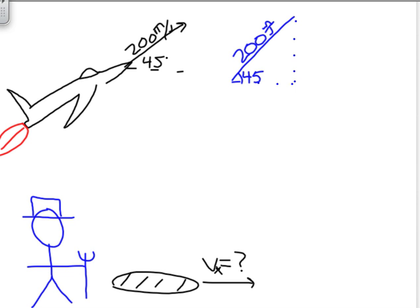So we want to know how fast is the shadow moving. In other words, what is the x component of this velocity vector?